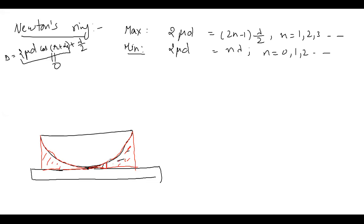Since alpha is extremely small, the central fringe or central ring in reflected light will always appear dark. If someone asks what the central ring looks like in transmitted light, it would be bright — because if reflected light is dark, transmitted light will be bright and vice versa. From here we'll derive the expression for the diameter of the rings, which is used to calculate the wavelength of the sodium lamp in the lab experiment.